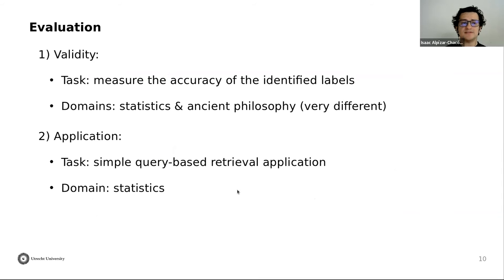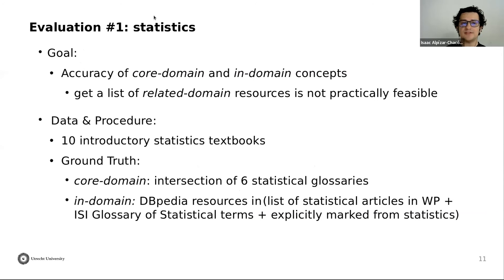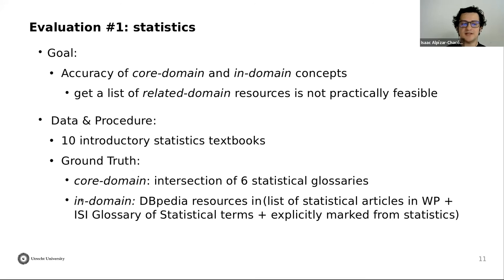For our evaluation, we tested two main aspects: validity and application. For validity, we measured the accuracy of the identified labels in two very different domains: statistics and ancient philosophy. For the statistics domain, we measured the accuracy of identifying core domain and in-domain concepts, using 10 introductory statistics textbooks. For the ground truth, we used the intersection of six statistical glossaries to identify core domain terms, and a list of statistical articles in Wikipedia to identify in-domain terms.